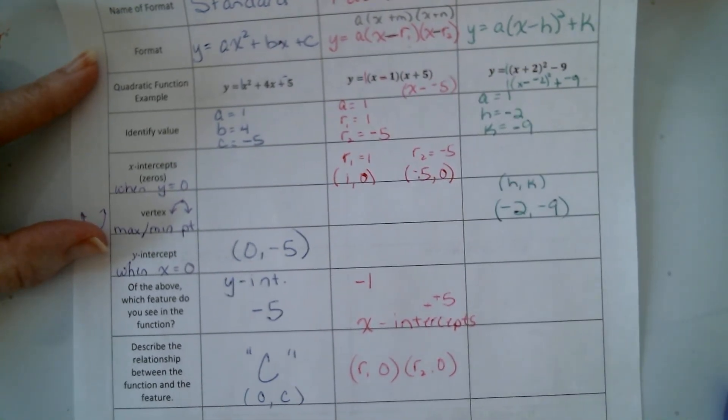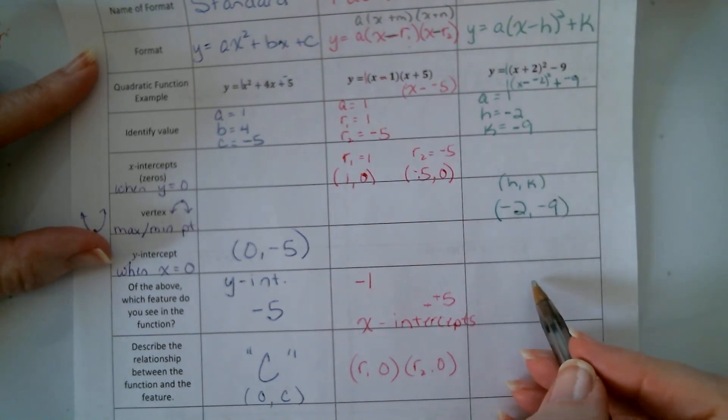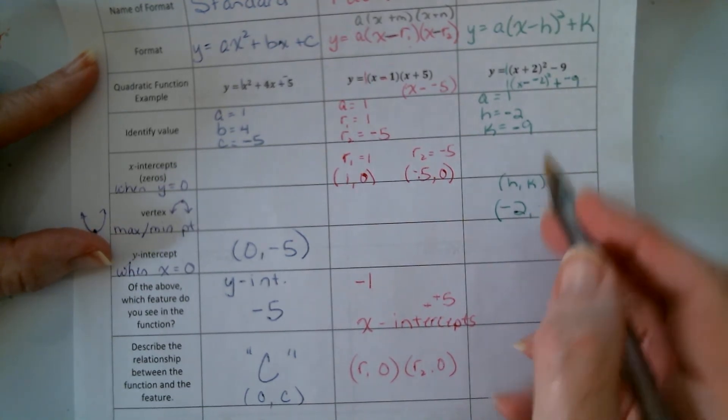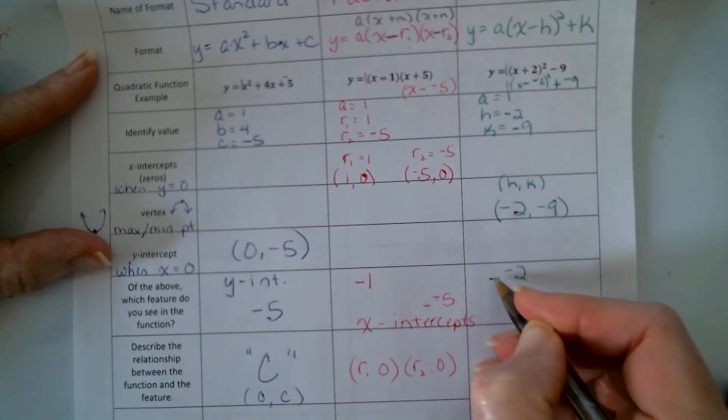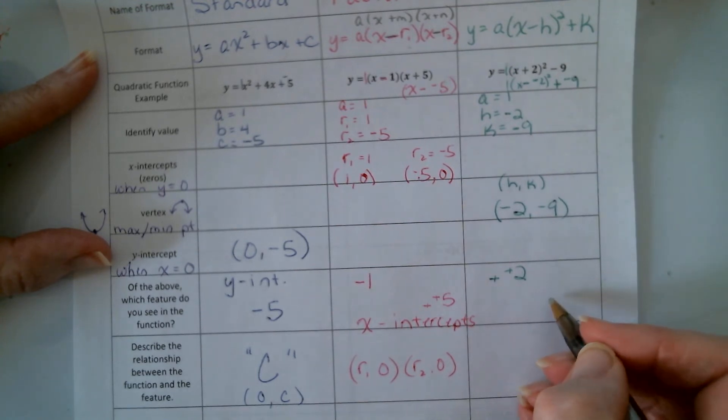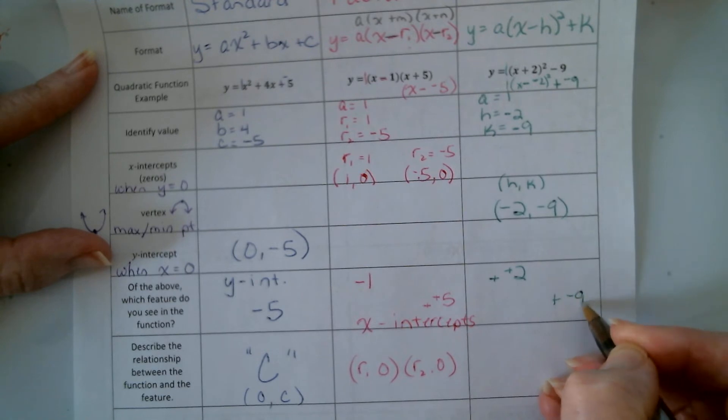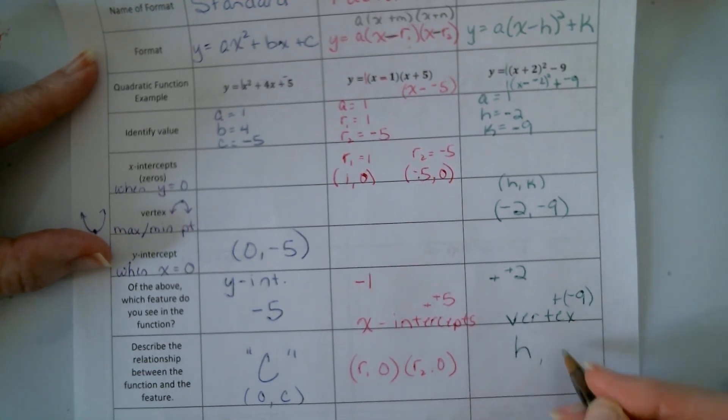And over here when we were in vertex form, what do we see? Well, technically, we saw positive two and a negative nine, but that is the vertex, right, that is the h and the k.